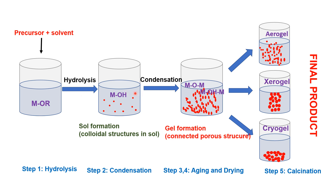A summary of the sol-gel process: first, a metal precursor is hydrolyzed to produce a sol. Second, condensation forms a connected porous networking structure through metal-oxygen and metal-hydroxo bridging, resulting in gel formation. After that, drying and aging are performed. Drying can be done by supercritical drying, thermal drying, or cryo-drying, producing different products such as aerogel, xerogel, and cryogel respectively. The final step is calcination at high temperature to produce the nanoparticle.